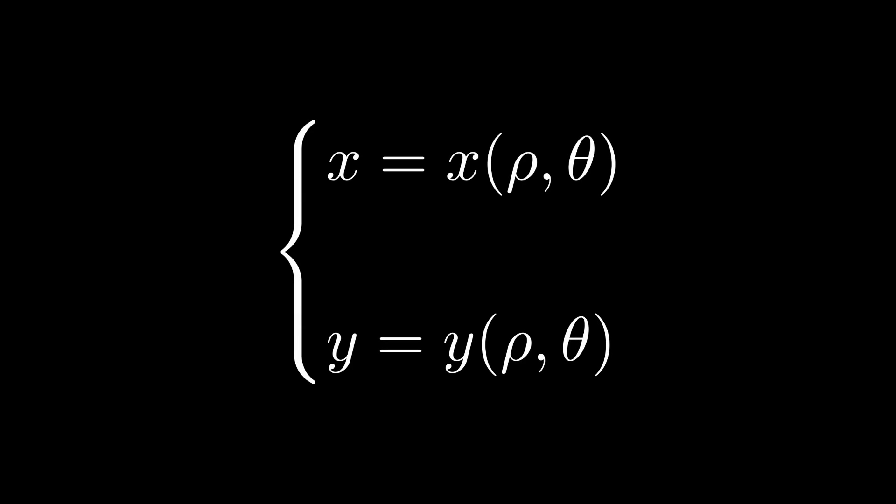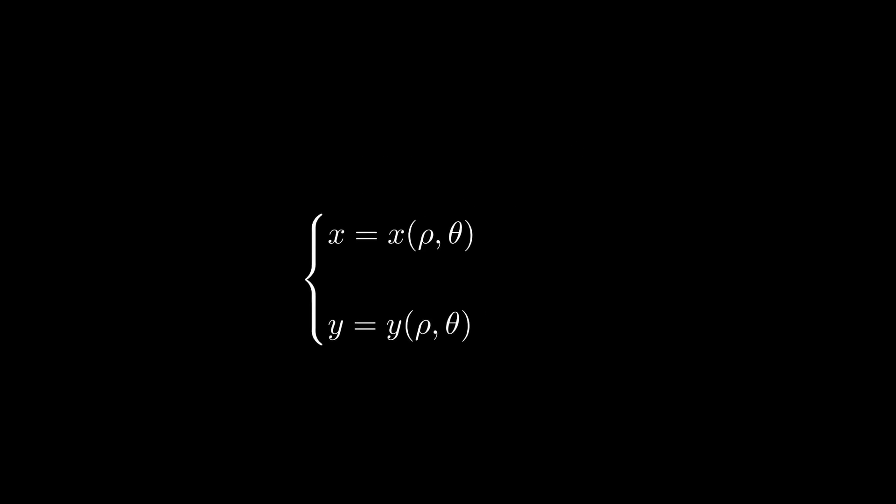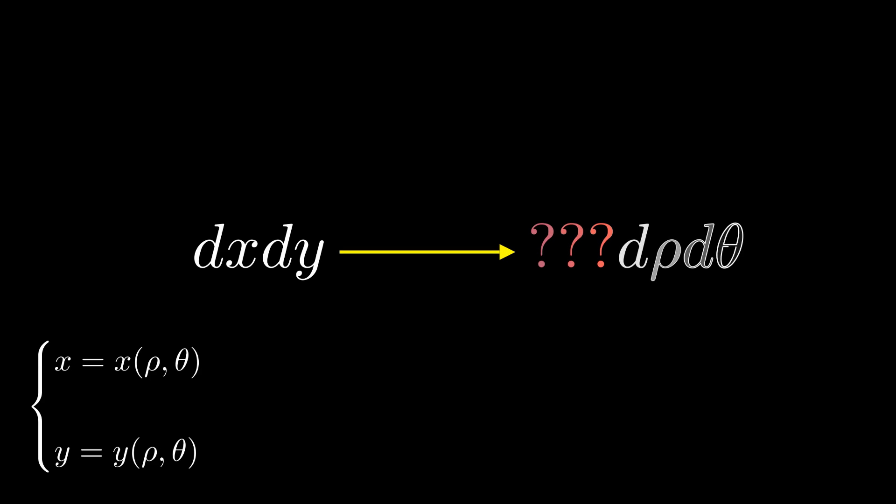However, now we have two variables that depend on two new other variables. So, what do we have to add when we transform from dx dy to d rho d theta? The answer is the Jacobian.